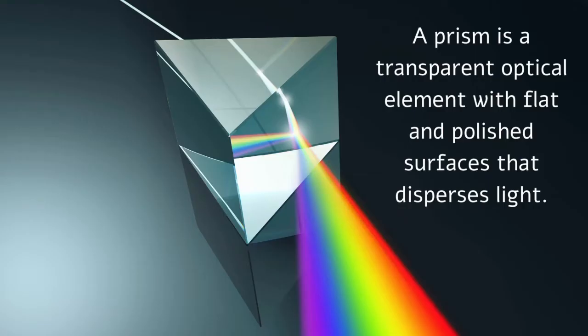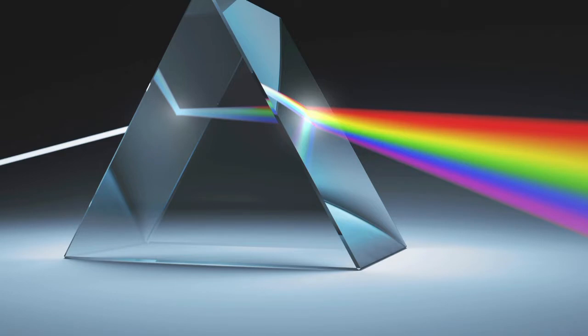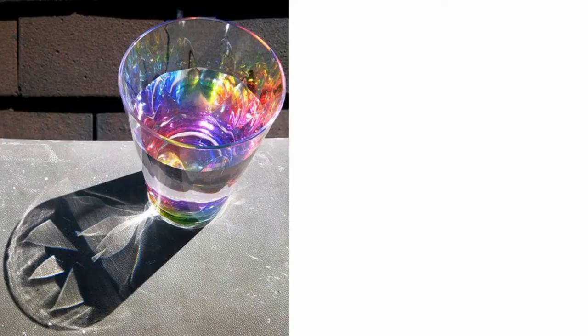A prism is a transparent optical element with flat and polished surfaces that disperses light. Usually a prism has a triangular base and rectangular sides. Prisms can be made from any transparent materials like glass, plastic or fluoride. Water in a glass can also act as a prism.